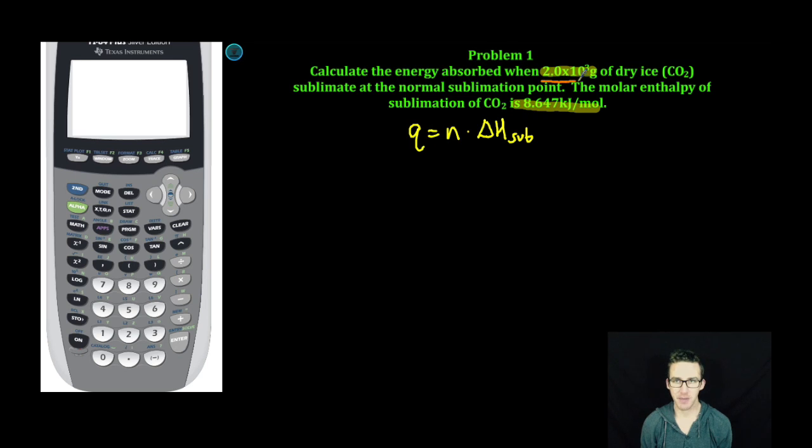Next, I'm going to take my mass in grams, 2.0 × 10³, and convert to moles. One mole of CO2 is about 44 grams. Quick trip to the calculator.